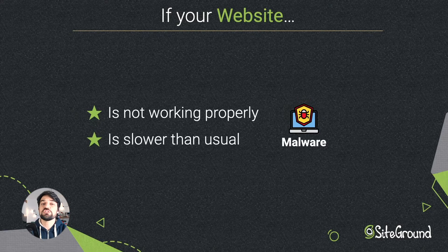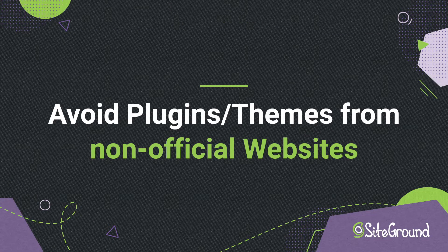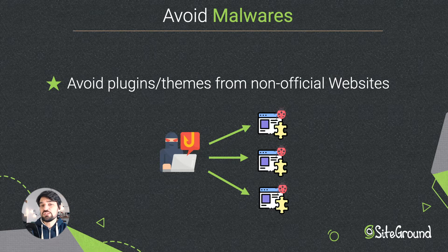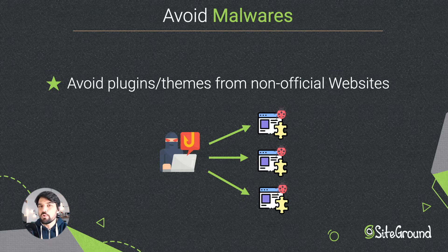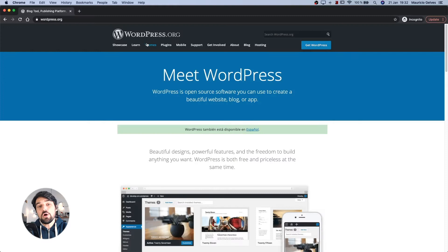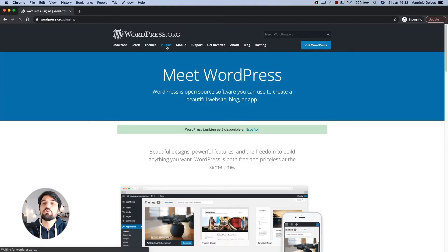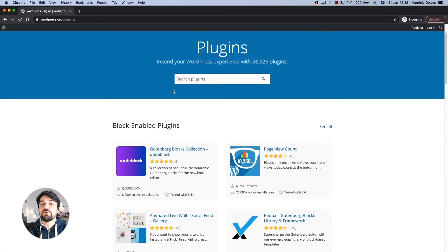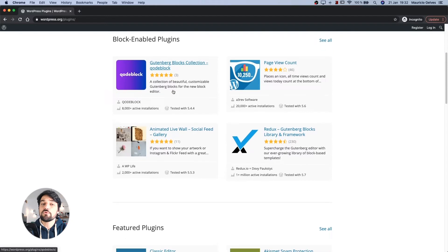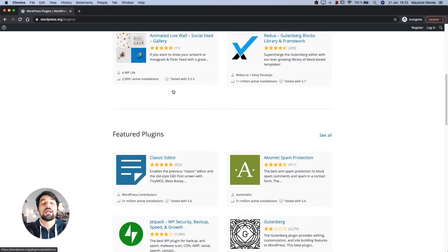Let's see how you can proceed to remove this problem. Avoid installing plugins from non-official websites. The most secure solution is to avoid installing free plugins from non-official sources — yes, they are free, but the code could have malicious malware installed. Instead, always try to download plugins and themes from the WordPress official repository or from well-known marketplaces.